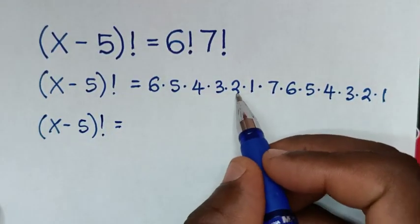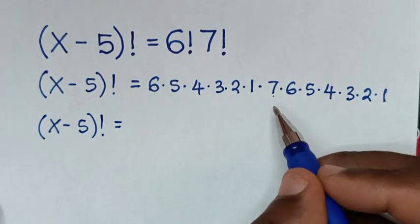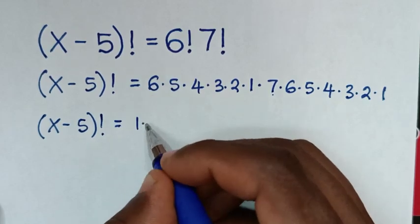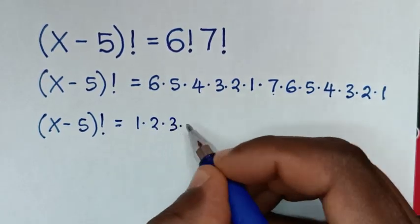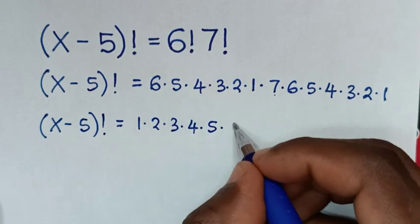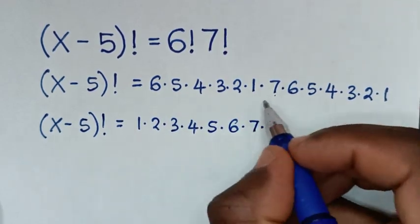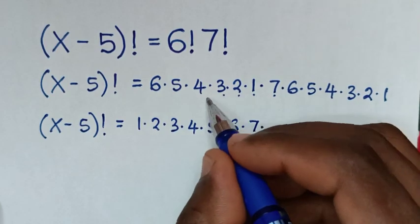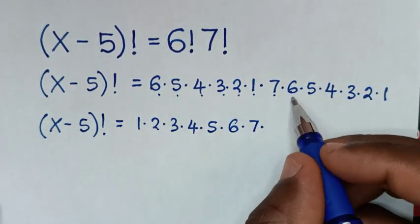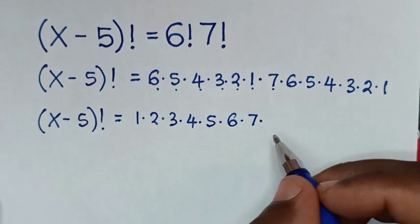So (x minus 5) factorial is equal to the product. From here we identify the factors: 1, 2, 3, 4, 5, 6, and 7. So we have 1 times 2 times 3 times 4 times 5 times 6 times 7. We have already taken all of these.